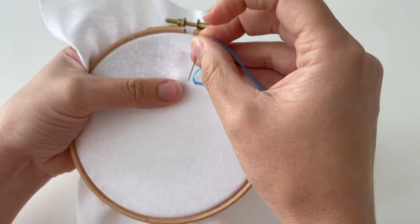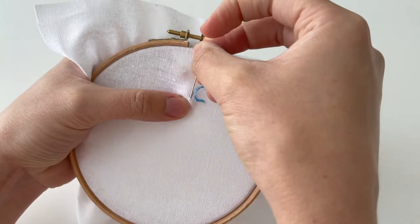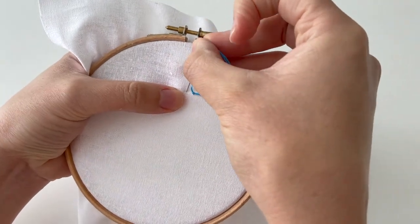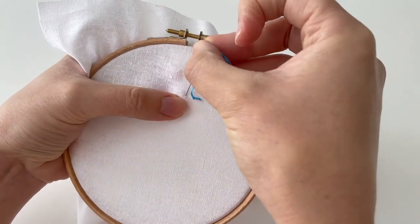So coral stitch is essentially a line with lots of knots in. So it's really nice actually, once you've got the hang of it.